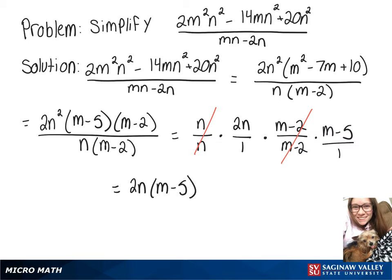And when you distribute that 2n we get 2mn - 10n.